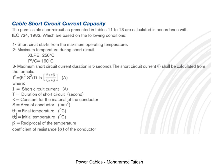Theta one is the final temperature in degrees Celsius, and theta two is the initial temperature in degrees Celsius. Beta is the reciprocal of the temperature coefficient of resistance, alpha, of the conductor.